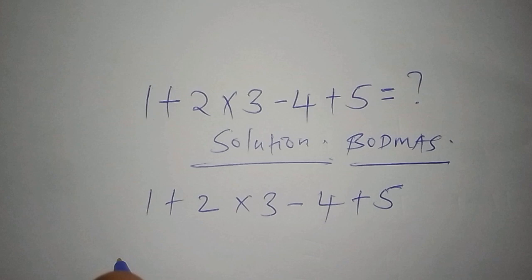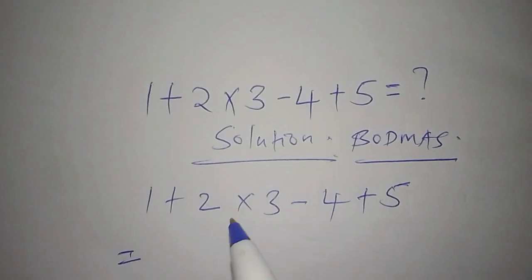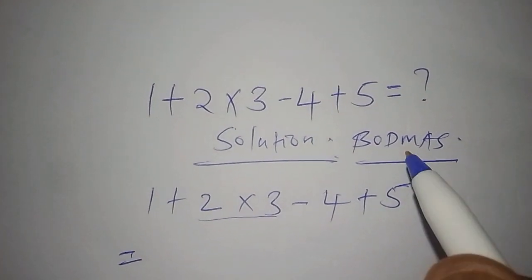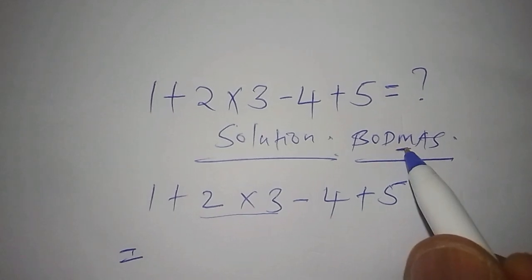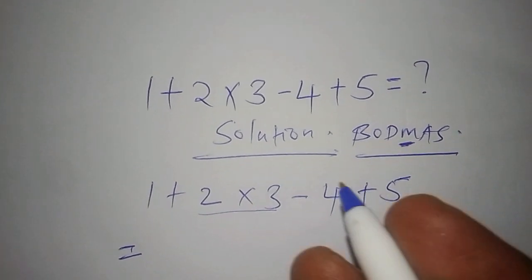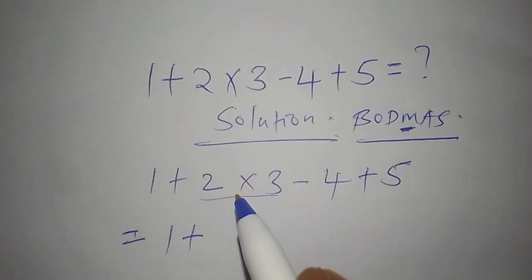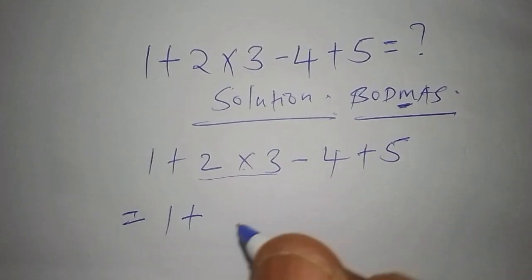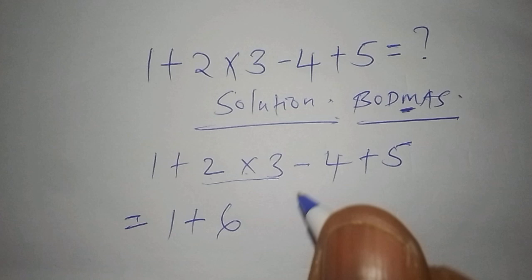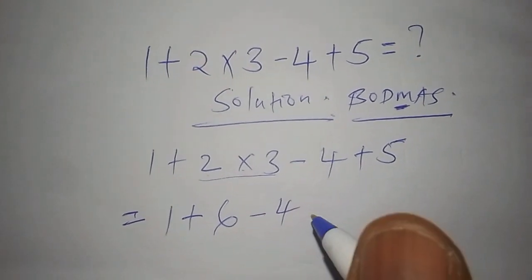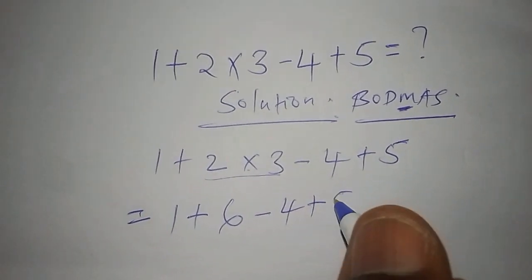This equals, we're going to start with the multiplication because M stands for multiplication. So this is 1 + 2 × 3, which gives us 6, then subtract 4, then add 5.